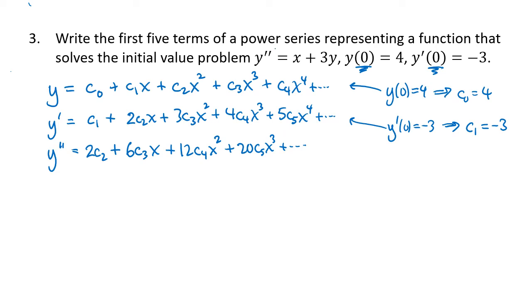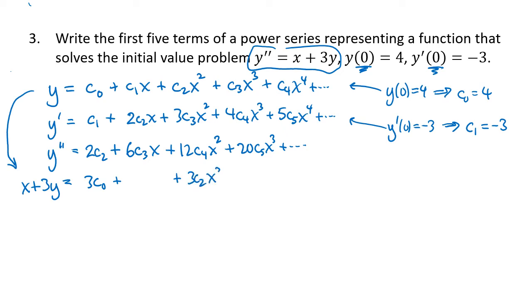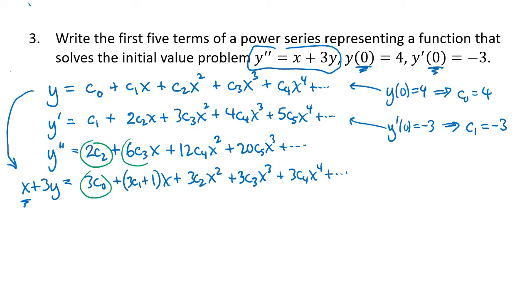The right-hand side is x + 3y. Tripling the y coefficients gives 3c₀ + 3c₁x + 3c₂x² + 3c₃x³ + 3c₄x⁴ and so on. Adding the x term means the x coefficient becomes 3c₁ + 1. Equating coefficients: 2c₂ = 3c₀, 6c₃ = 3c₁ + 1, and so on — we stop once we find c₄.